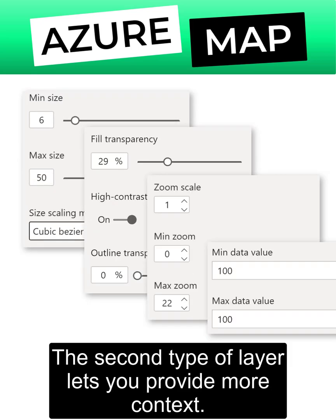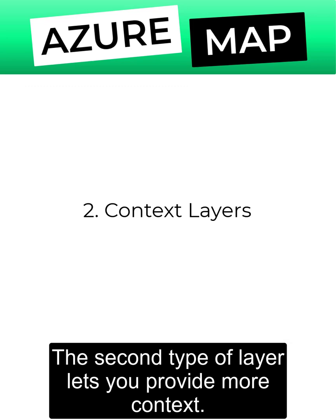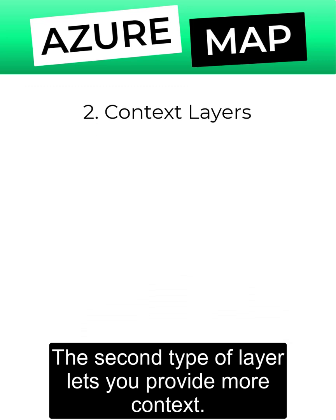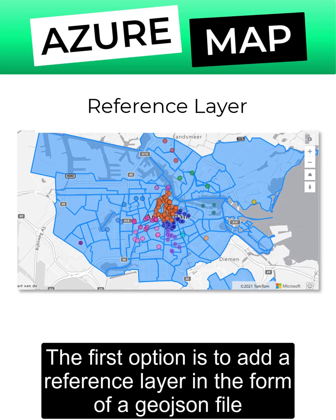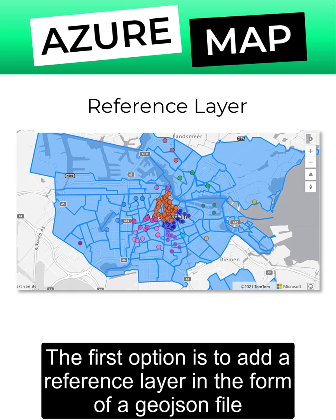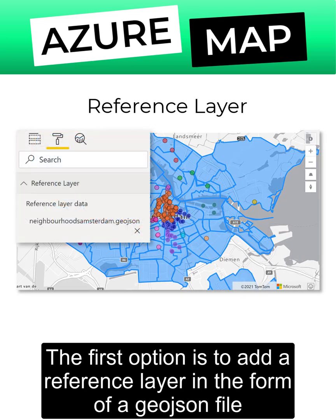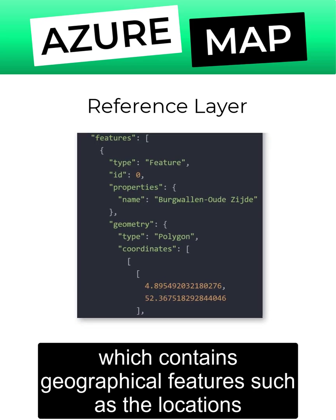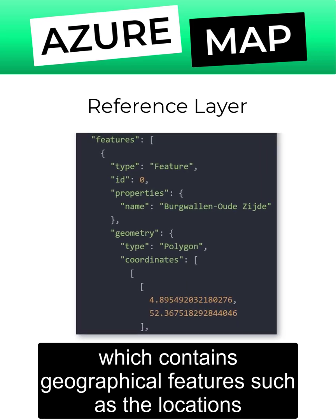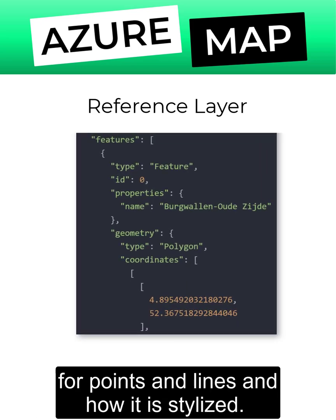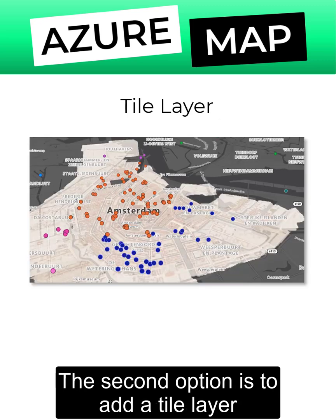The second type of layer lets you provide more context. The first option is to add a reference layer in the form of a GeoJSON file, which contains geographical features such as the locations for points and lines and how it's stylized.